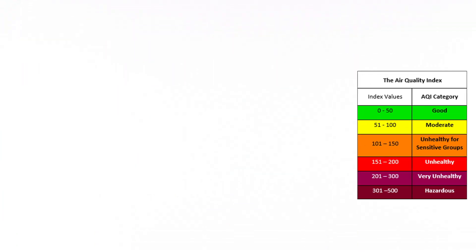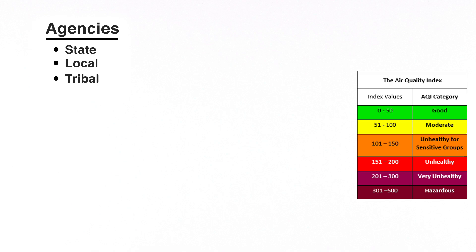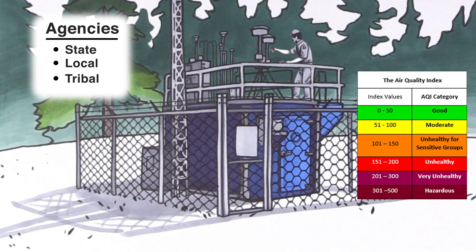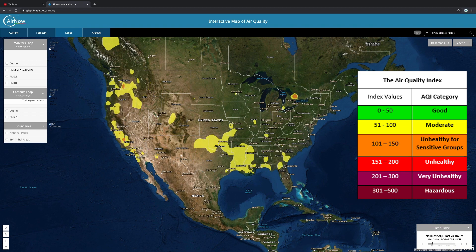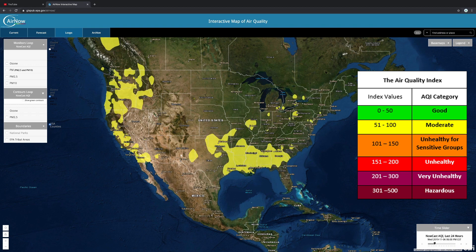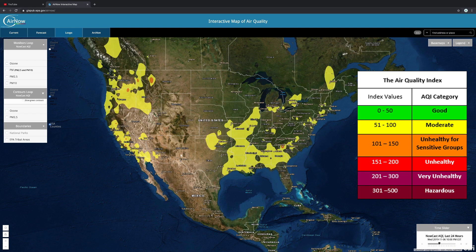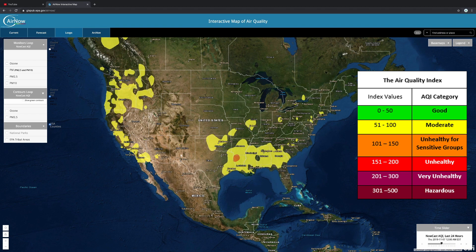The AQI is based on these standards. State, local, and tribal agencies send air quality measurements from monitors in near real time to the AirNow website, which displays the AQI values and colors. EPA takes this information and uses the NAAQS method to calculate the current air quality index each hour.